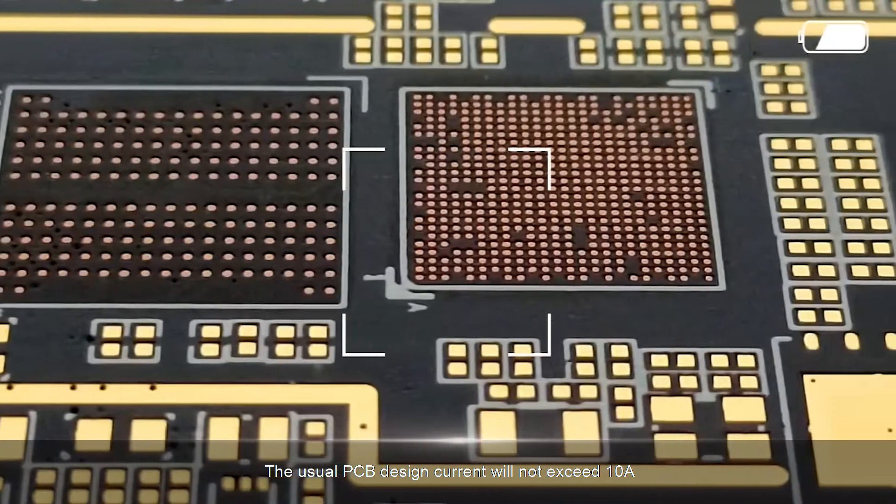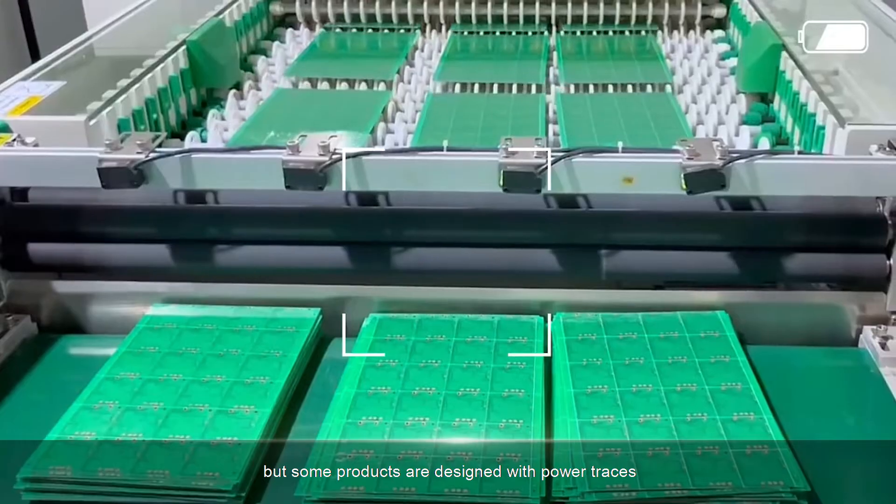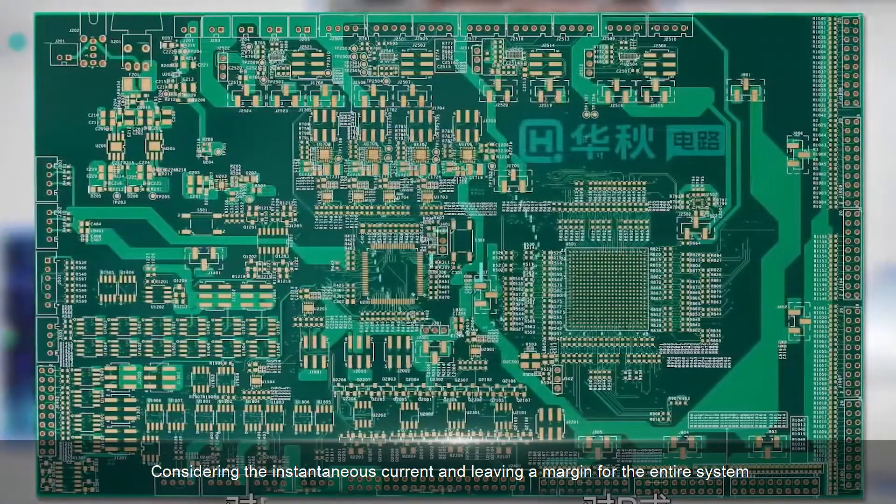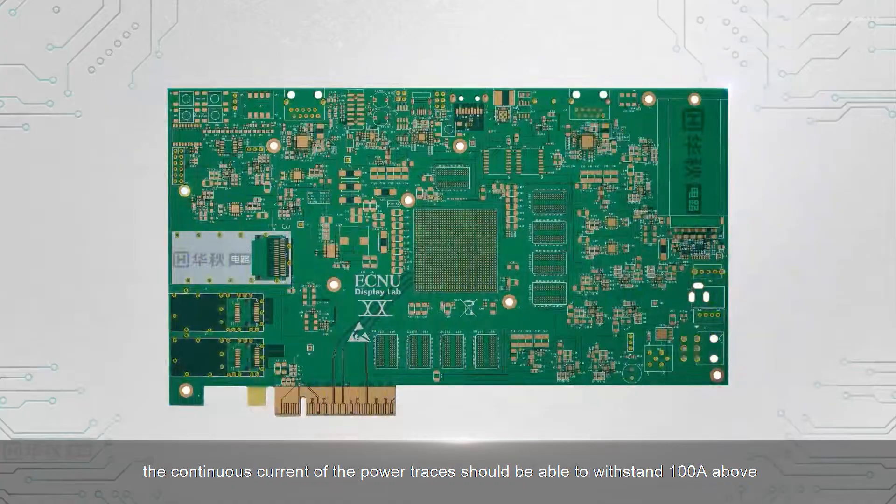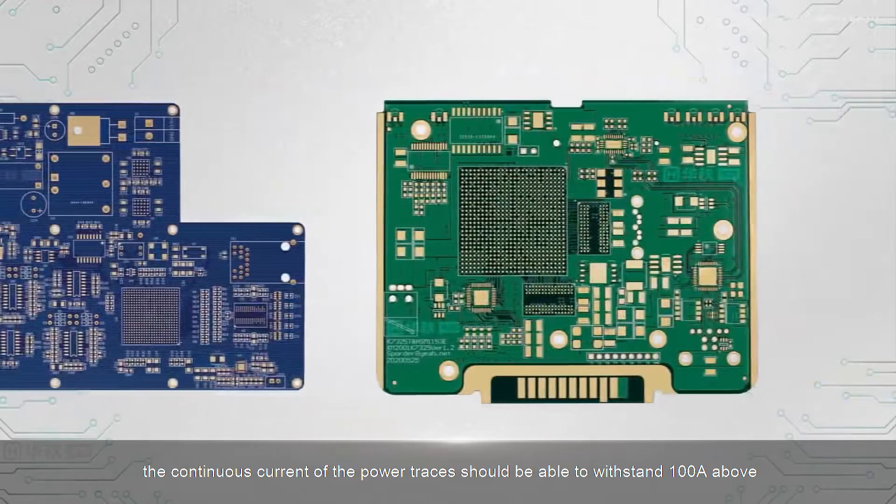The usual PCB design current will not exceed 10A, but some products are designed with power traces and the continuous current can reach about 80A. Considering the instantaneous current and leaving a margin for the entire system, the continuous current of the power traces should be able to withstand 100A or above.